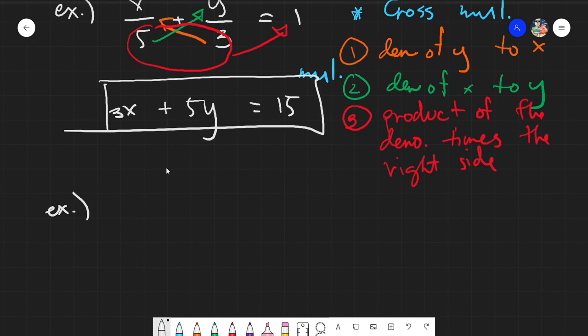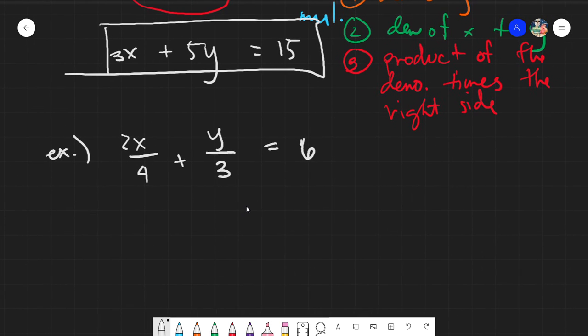So let's have another example. Say we have x over 4 plus y over 3 equals to, say, 6. So what happens here? Cross multiply. 2x times 3 is 6x plus 4 times y is 4y. And we have 4 times 3 is 12, and 12 times 6 is 72. Giving us 6x plus 4y is equals to 72.